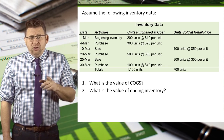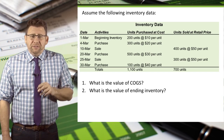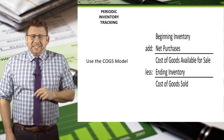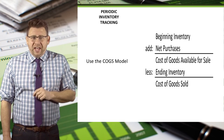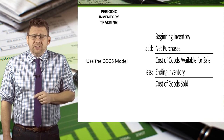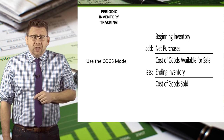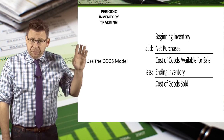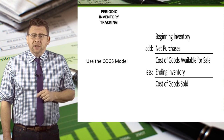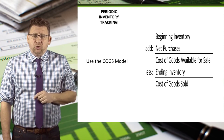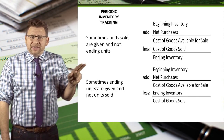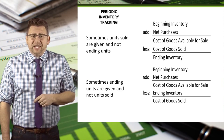With this data and using LIFO, let's determine the value of ending inventory and the amount of cost of goods sold that should be recorded. Since inventory isn't accounted for after each transaction, we need to use the cost of goods sold model. The model is: beginning inventory plus purchases equals goods available for sale. From that, we subtract ending inventory to arrive at cost of goods sold. We could also subtract units sold to arrive at units in ending inventory.